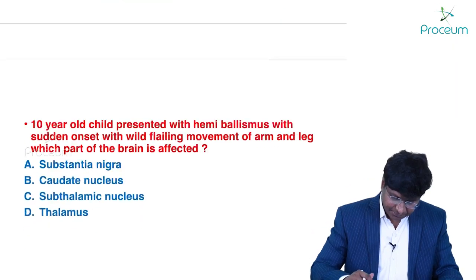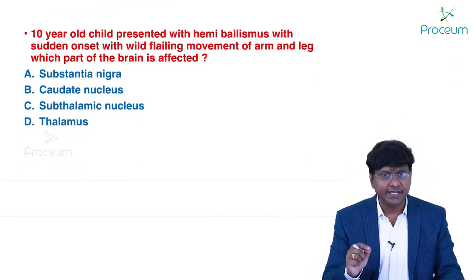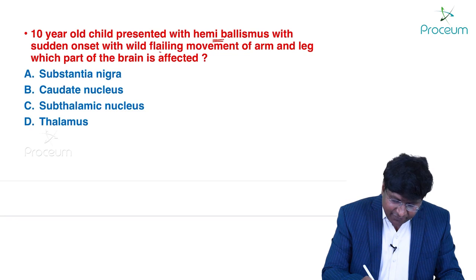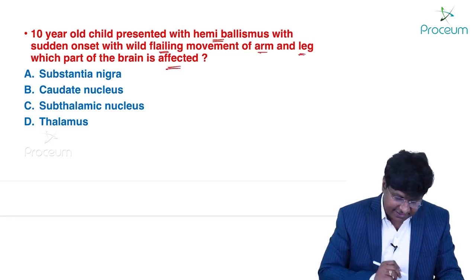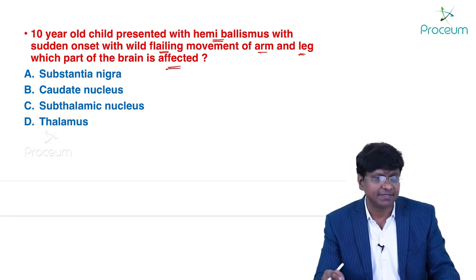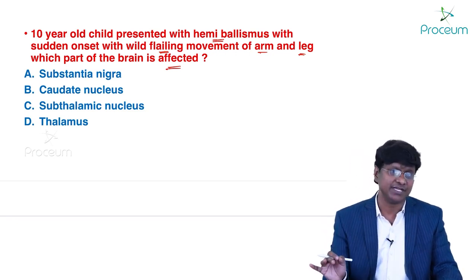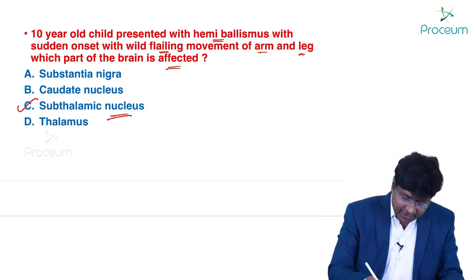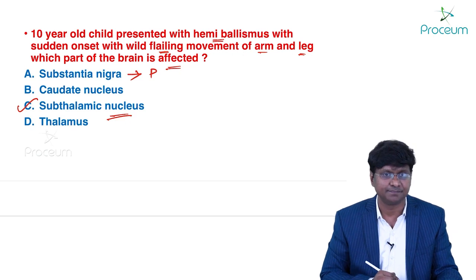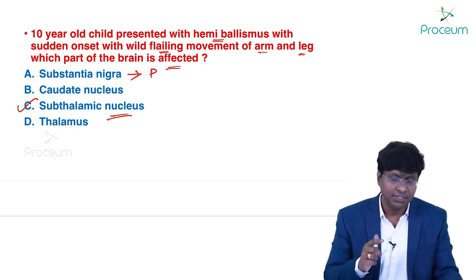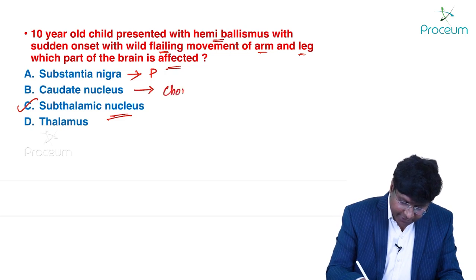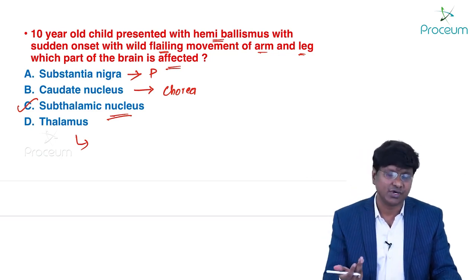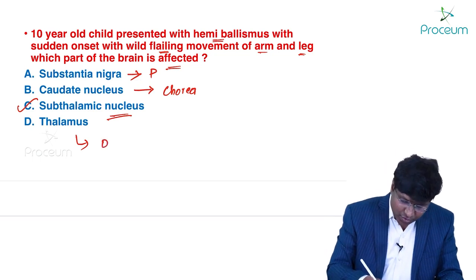A 10-year-old child presents with hemiballismus — sudden onset wild flailing movements of the arm and legs. Which part of the brain is affected? Options are substantia nigra, caudate nucleus, subthalamic nucleus, thalamus. Hemiballismus results from a lesion in the subthalamic nucleus. Substantia nigra lesion causes Parkinson's disease. Caudate nucleus lesion causes chorea. Thalamic lesion causes sensory loss on that half of the body — known as Dejerine-Roussy syndrome. The answer is the subthalamic nucleus.